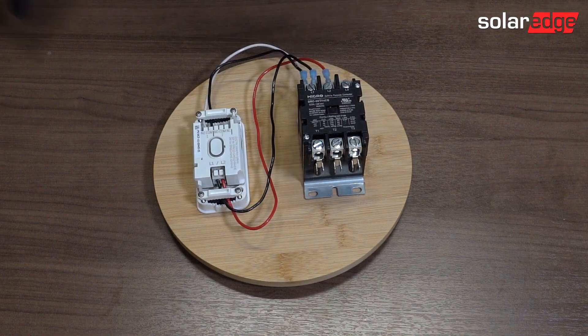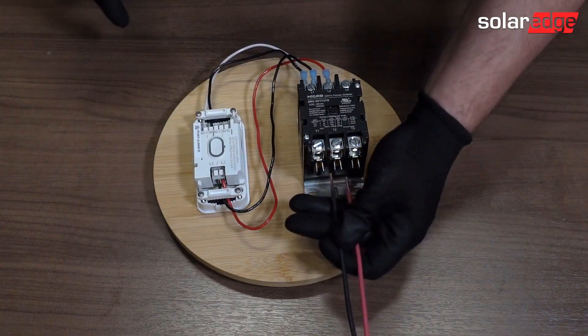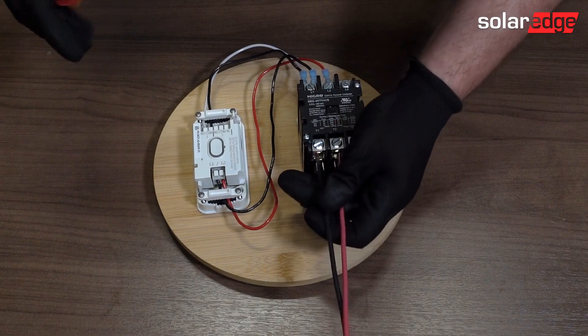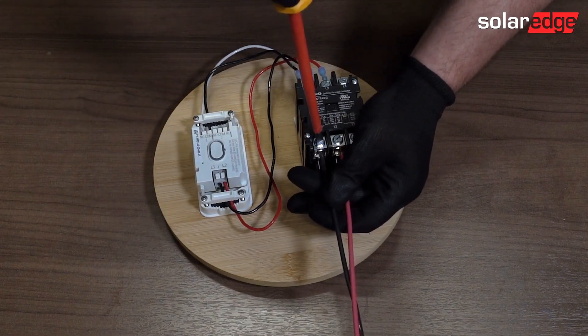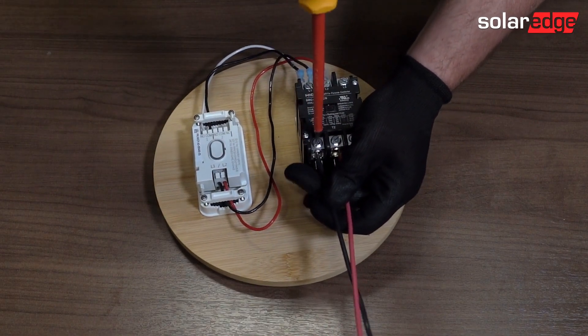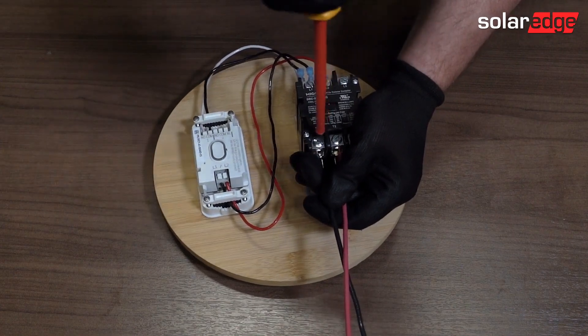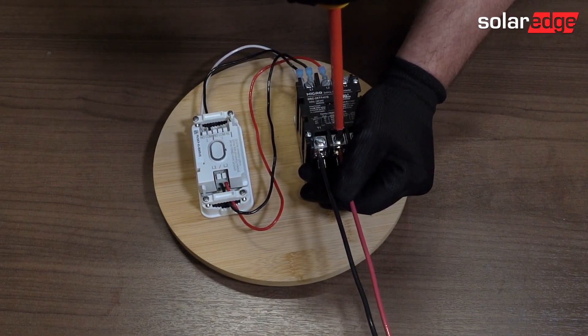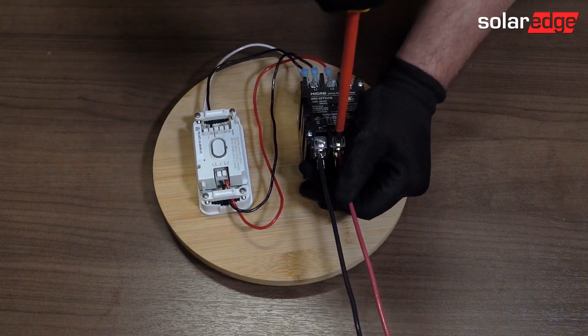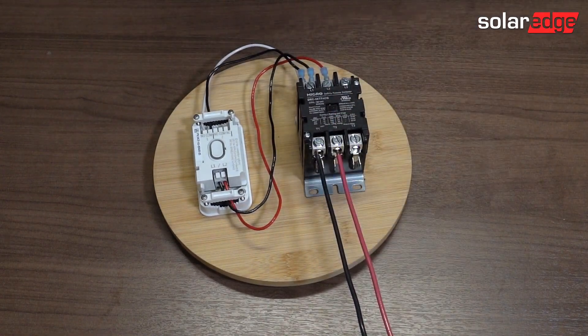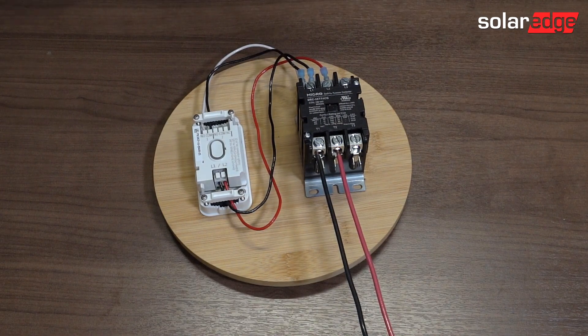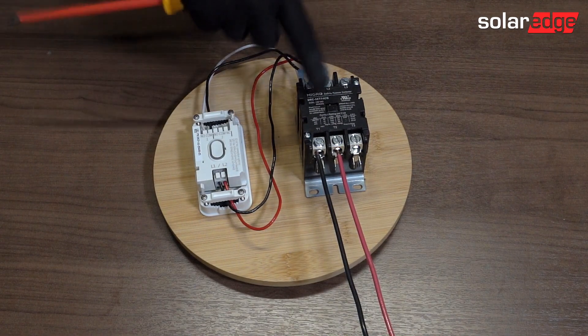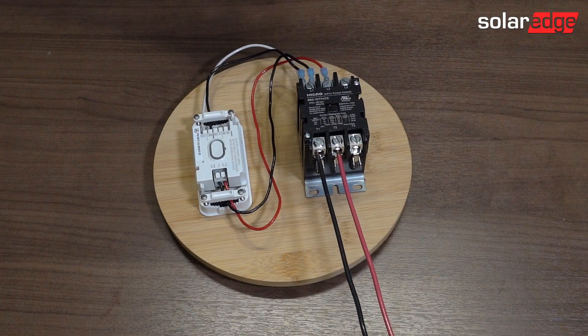Okay, so now we're going to wire from the load side to our load. And so I'm just going to do line one and line two. You know, you never switch the neutral, so that's why you don't see me adding a neutral here. Okay. And now we're going to go from the breaker to the supply side of the contactor.